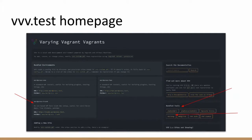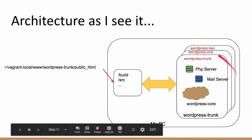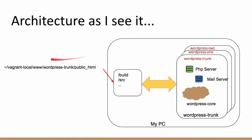At this point everything might seem fuzzy — it sure was when I first started. This is where I want to emphasize that you need to understand the structure of WordPress code. The architecture as I see it: there's your computer containing all your code. You install this folder, vagrant-local/www, and then WordPress trunk is the installation you work on. Within this folder there's a source folder and a build folder. The source folder is where you have your code to modify; you build it to get the build folder, and that's what runs when you spin up your WordPress.